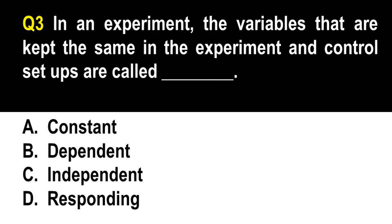Question number 3. In an experiment, the variables that are kept the same in both the experiment and control setups are called: A. Constant. B. Dependent. C. Independent. D. Responding. You have to review the three types of variables. The independent variable is the one that is manipulated or changed. The dependent variable is the one that is observed or measured. The constant variable is the one scientists keep constant to determine whether changing the independent variable has an effect on the dependent variable.